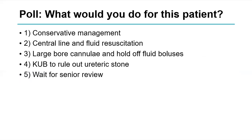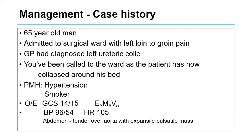No prizes for guessing — this is most likely a ruptured AAA. We're going to do a quick poll for the next 30 seconds. What would you do for this patient? Options are: conservative management; central line and fluid resuscitation; large-bore cannula and bolus fluid; KUB to rule out ureteric stone; or a bedside scenery review. Some of you indicated central line fluid resuscitation, some said large-bore cannula and bolus fluids. Notably, none indicated KUB — excellent.